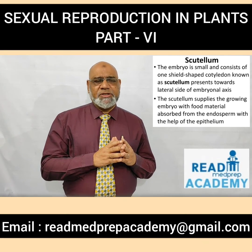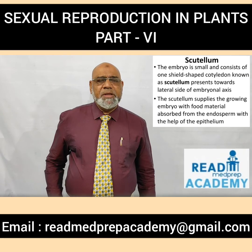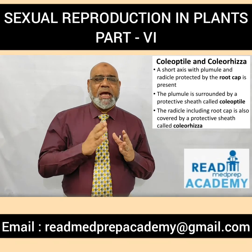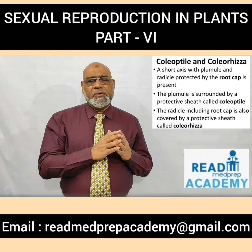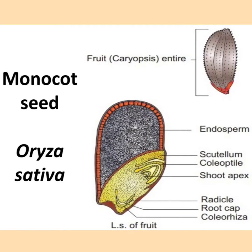The scutellum is present toward the lateral side of the embryonal axis and supplies the growing embryo with food material absorbed from the endosperm with the help of the epithelium. A short axis with the plumule and the radicle protected by the root cap is present. The plumule is surrounded by a protective sheath called the coleoptile; the radicle including the root cap is covered by a protective sheath called the coleorhiza. In the image of the paddy caryopsis (Oryza sativa), you can see the scutellum, the coleoptile surrounding the plumule and shoot apex, and the radicle surrounded by the coleorhiza.